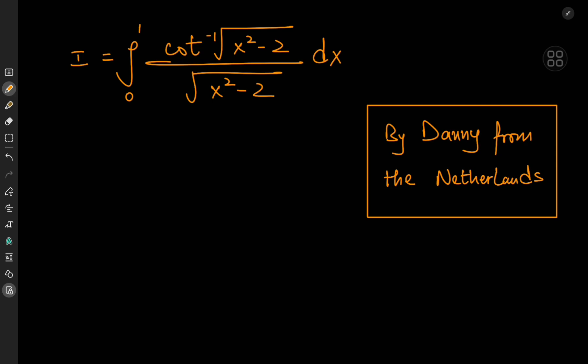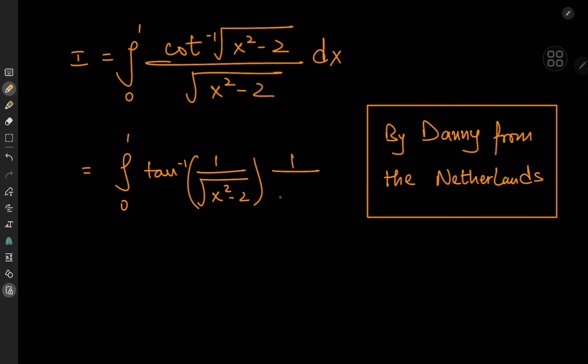So how do we approach this integral? Let's start off by writing the inverse cotangent in terms of an inverse tangent, and we can do that by reciprocating the argument. So we can write this as the integral from 0 to 1 of the inverse tangent of 1 over root x squared minus 2, times 1 over root x squared minus 2, dx.